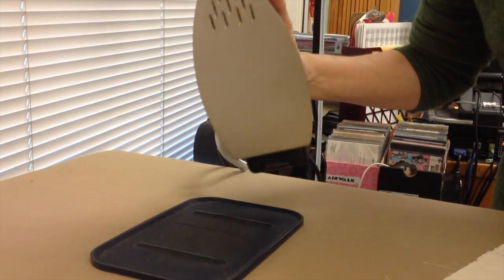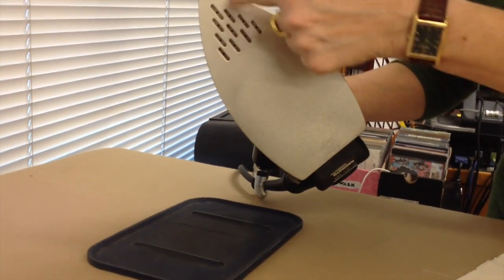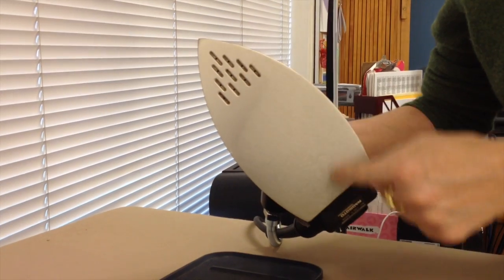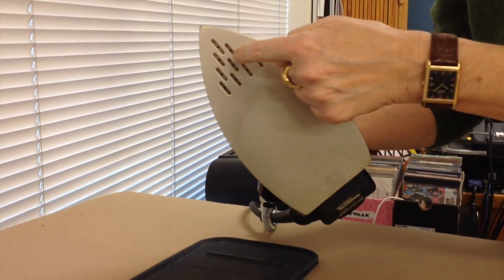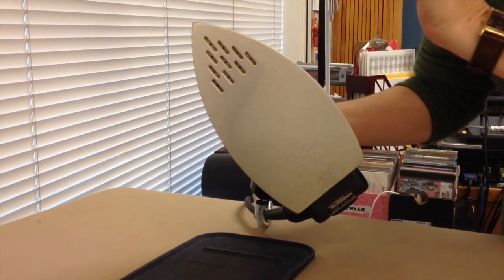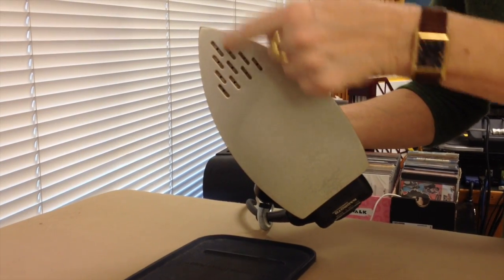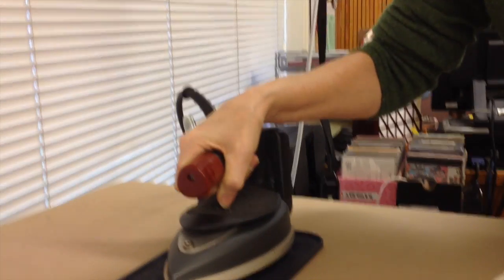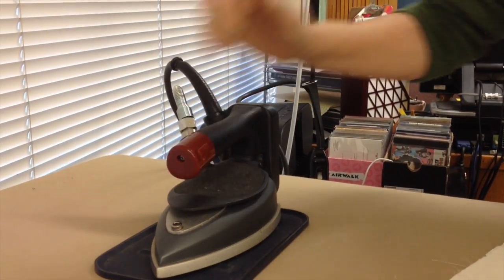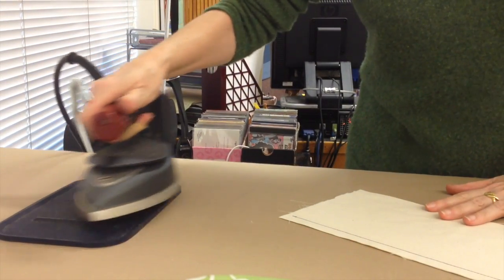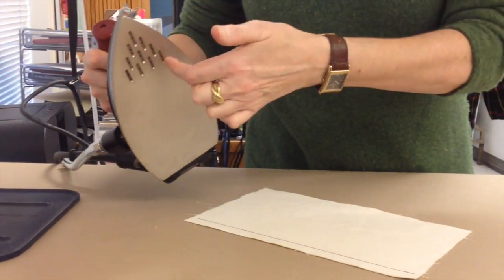The steam itself comes out of these vents on the tip of the iron. The rest of it is just heat, but if you're wanting to actually steam on your garment, you want the tip of your iron on the spot that you want to have ironed. Remember the steam comes out of the tip of the iron.